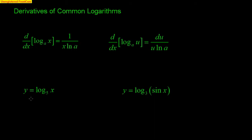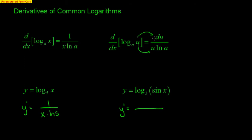When you have the common log base a of x, the derivative is 1 over x times the natural log of the base. So for log base 5 of x, y prime equals 1 over x times the natural log of 5. When the argument is more complex than just x, the derivative of that inside goes in the numerator as du, and the inside goes in the denominator. For log base 3 of sine x, y prime equals cosine x over sine x times the natural log of 3.